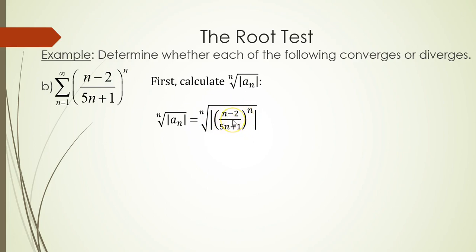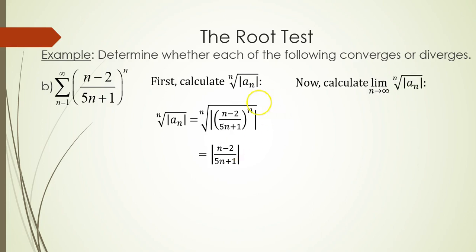When you take the nth root of something raised to the n power, the n power and the nth root cancel each other out. You're left with the absolute value of (n minus 2) over (5n plus 1). We keep the absolute value because when n equals 1, the fraction gives a negative value: 1 minus 2 is negative 1.